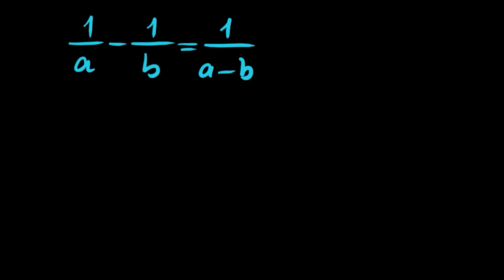Hello everyone, welcome to the channel. We have the equation 1 over a minus 1 over b is equal to 1 over a minus b. We are to give a general solution to this equation.